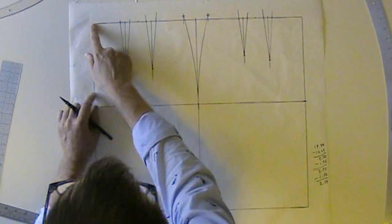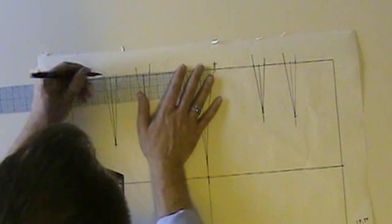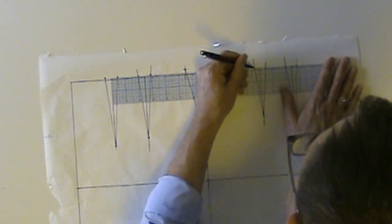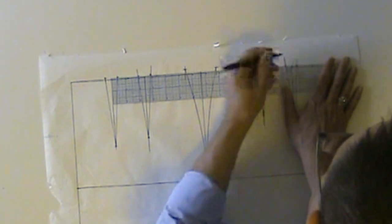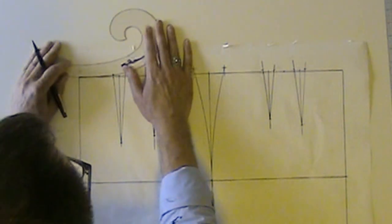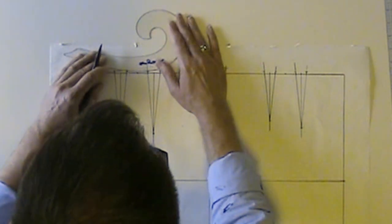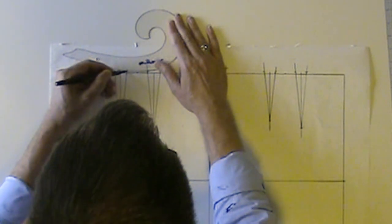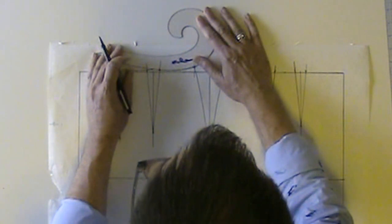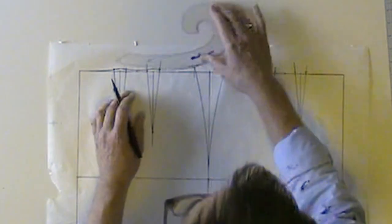Now in order to blend smoothly from nothing to 3/8 up, as before I'm going to make a mark an eighth of an inch above the line at the top of my darts in the front and the back. Now I can take my French curve and true up.